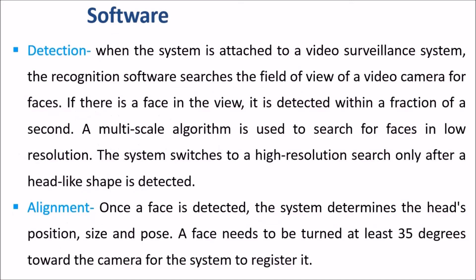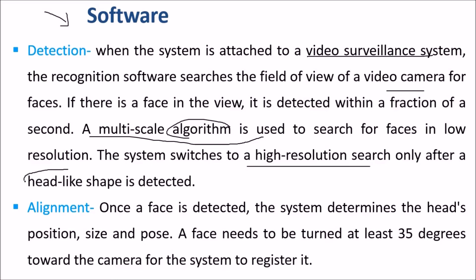When the system is attached to a video surveillance system, recognition software searches the camera's field of view for faces, detecting them within a fraction of a second. A multi-scale algorithm searches for faces at lower resolution, switching to higher resolution only after a head-like shape is detected. When a face is detected, the system determines the head's position, size, and pose — a face needs to be turned at least 35 degrees toward the camera for the system to register it.